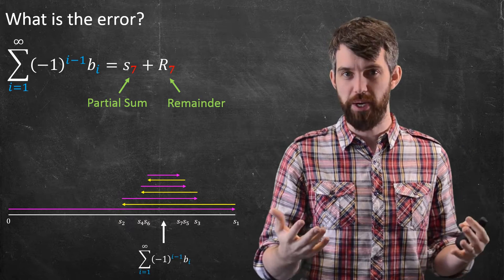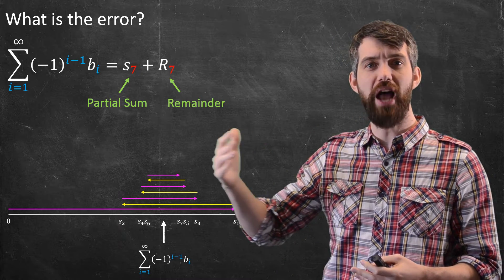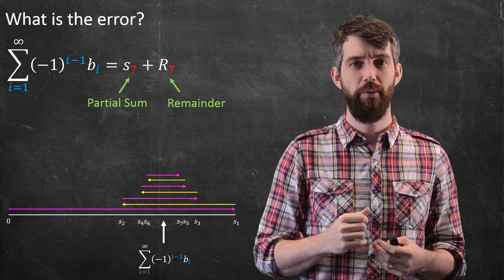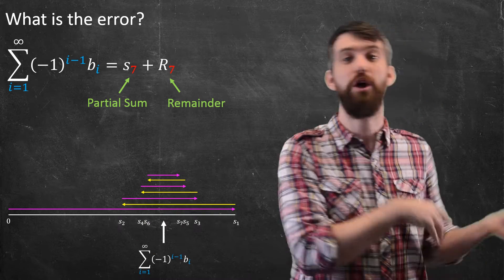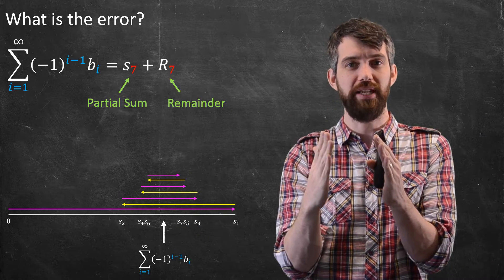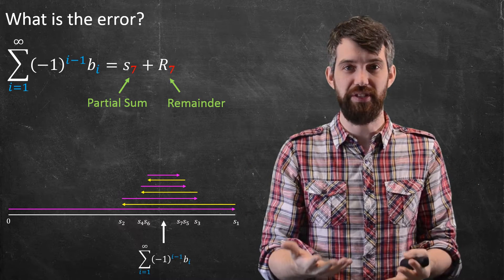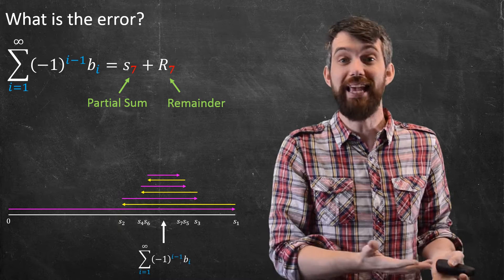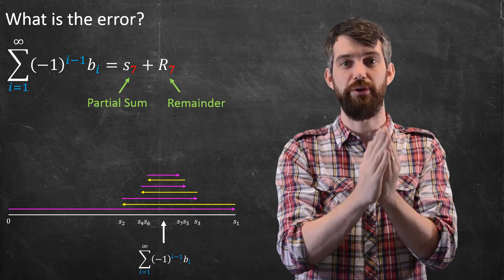To think about what this remainder could be, we're currently at s7, and imagine we wanted to go from s7 out to s8. Well, after we went out to s8, we would then come back to s9, and go out to s10, and so on. But based on the way that this collapsing works, the furthest I can ever get away from s7 in the entire rest of the series is going to be s8. Because after that, I'm going to get closer and closer. That's the way this alternating series works.